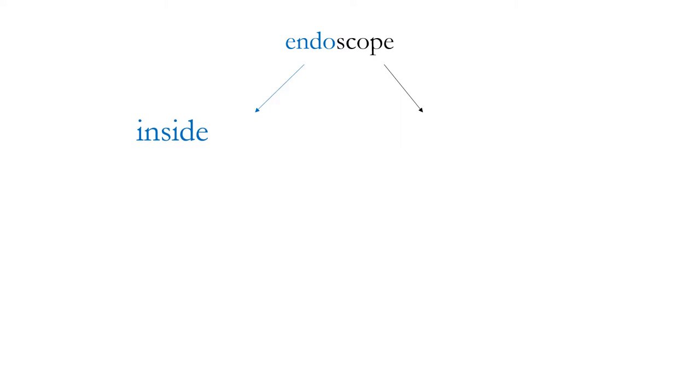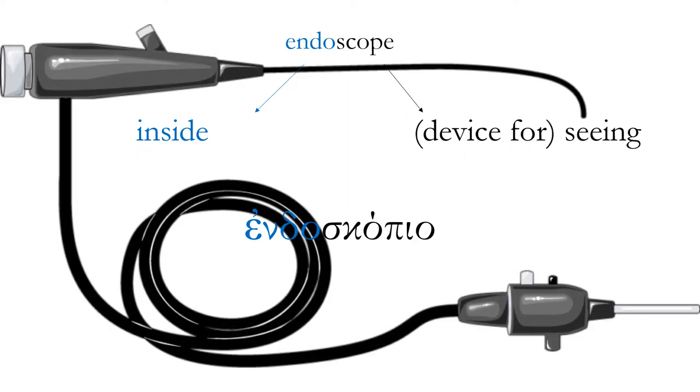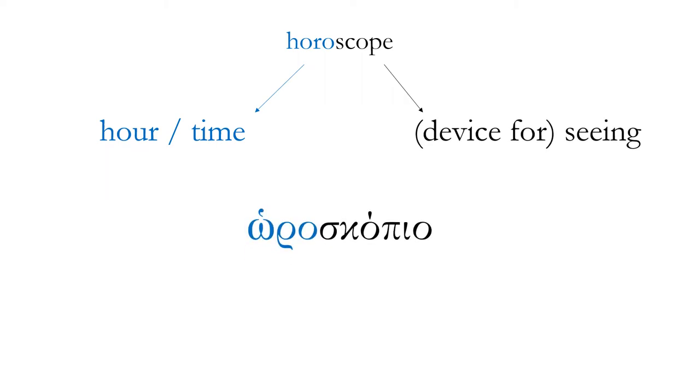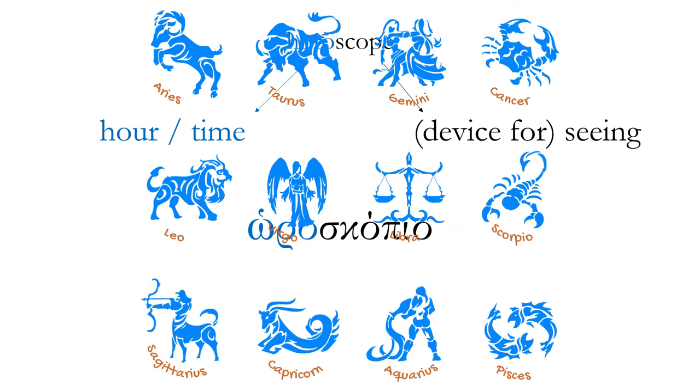Endoscope: endo means inside, so an endoscopio, an endoscope, is something that helps us see inside the body, deep inside the body. Horoscope: hora means hour or time in Greek, we know the word order. So an oroscopio, and this is related to the horoscope, which is easily predicted based on our calendar and the ecliptic and the constellations and things like that.